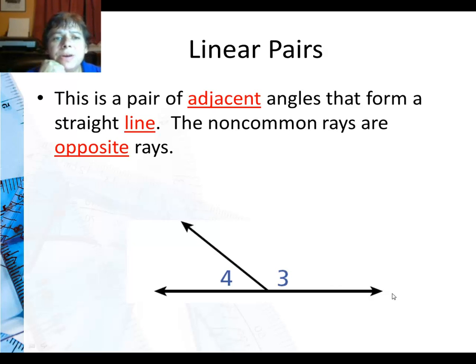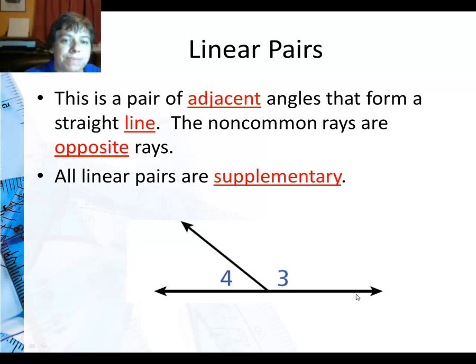Now linear pairs, this is a pair of adjacent angles that form a straight line. Okay so they're touching and they form a straight line. The non-common rays, that would be this bottom part here and over here, are opposite rays. They start at the same point and go in opposite directions creating a line. All linear pairs are supplementary because together they make a straight line which is 180 degrees.